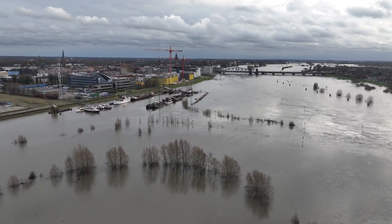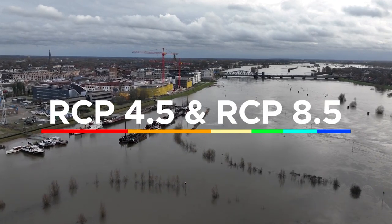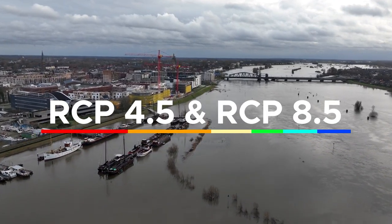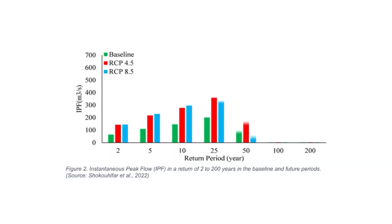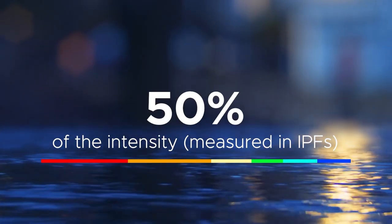Shakuhai Far et al., 2022 evaluated climate change scenarios. All climate projections, such as RCP 4.5 and RCP 8.5, show significant increases in all types of flooding categorized by return period. The study highlighted significantly increased peak flows in rivers that contribute to flash floods. The instantaneous peak flow (IPF) represents the maximum discharge, or flow rate of water, at a specific point in a river over a short period of time. Larger IPFs mean faster and greater volumes of flood water. The graph shows that all flood forms significantly affected by climate change give nearly 50% of the intensity measured in IPFs.